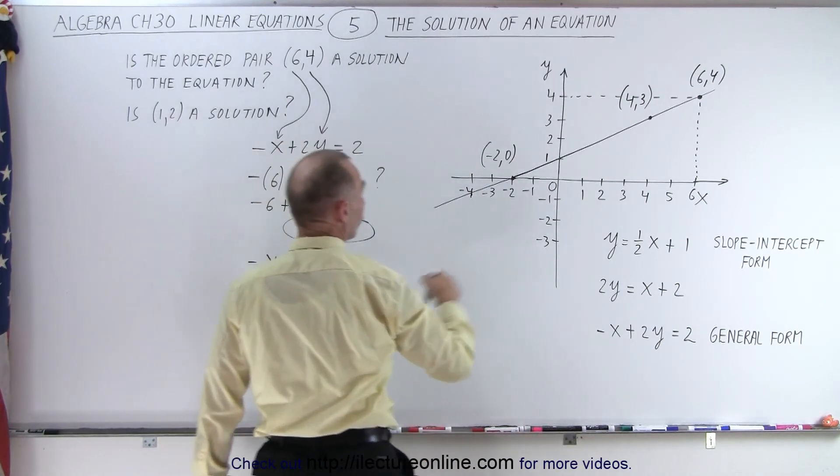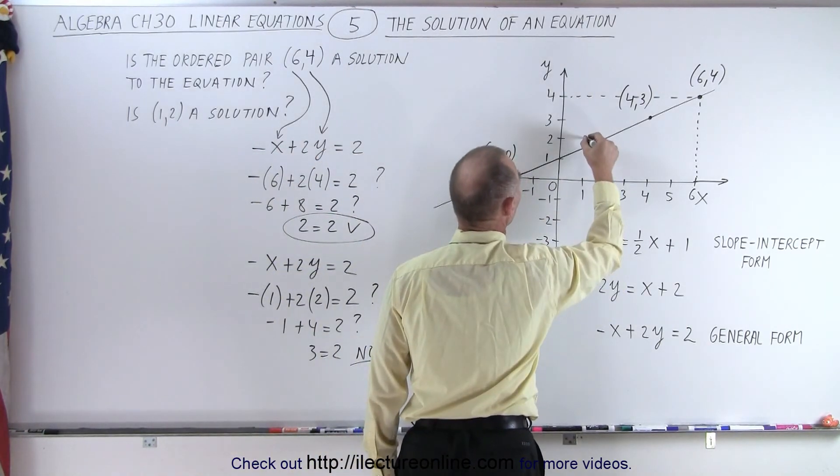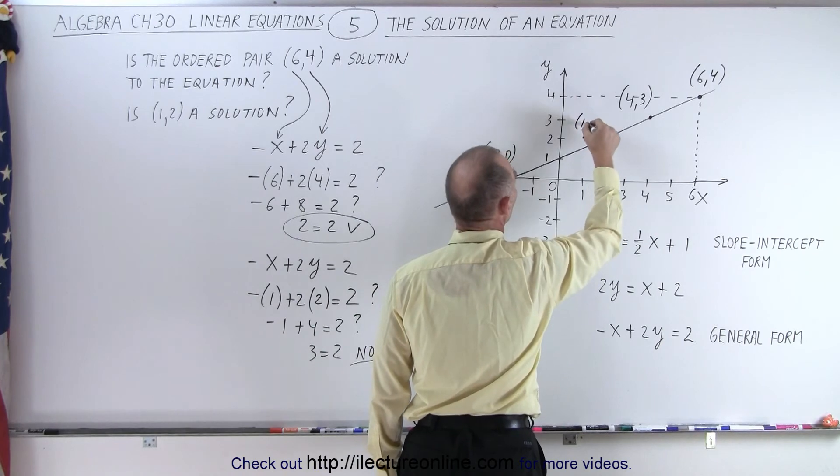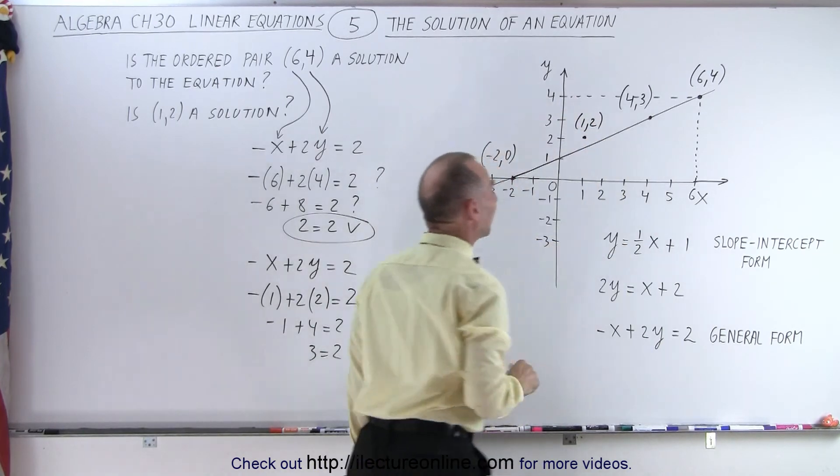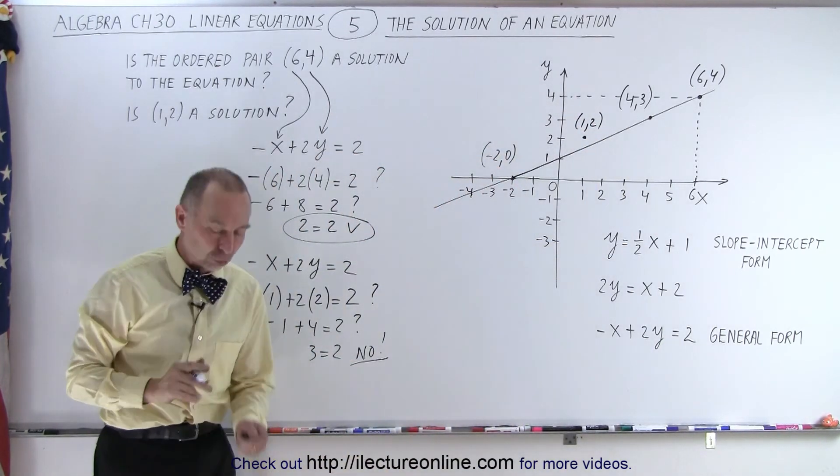And the next point, 1 and 2, we have 1 here. We have 2 there. And notice the point (1, 2) is not on the line. And therefore, that was not a solution.